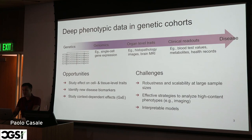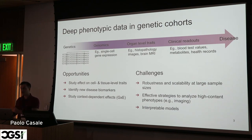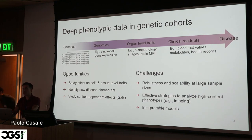Nowadays, I like claiming that we have the right depth of phenotypic data to actually start looking into these questions. We now measure alongside genetic data: single-cell gene expression datasets, large cohorts of medical imaging data, and several clinical readouts and disease biomarkers. With these large genetic cohorts we have new opportunities — we can study how genetic variants affect these intermediate phenotypes, identify new disease biomarkers, and study how genetic effects depend on different environmental exposures, something known as G×E interaction.